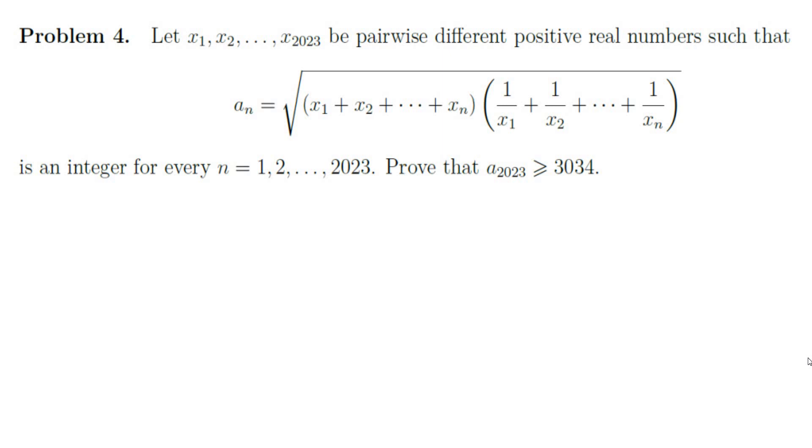Let x1 through x2023 be pairwise different positive real numbers such that an equals the square root of the sum of them times the sum of the reciprocals is an integer for every n between 1 and 2023. And then they're asking us to prove that a2023 is at least 3034.